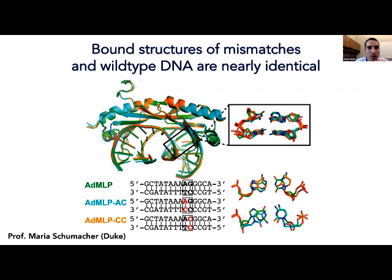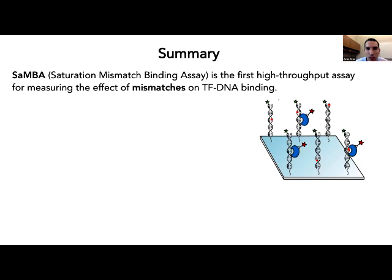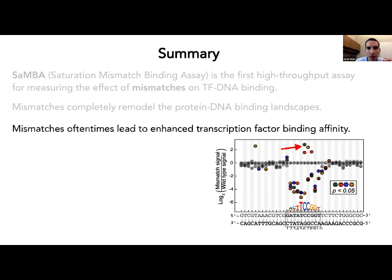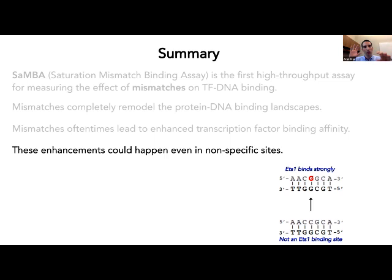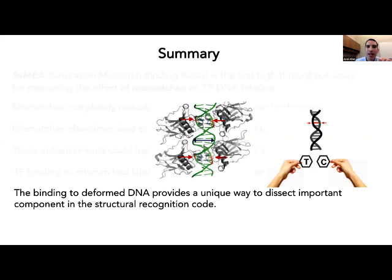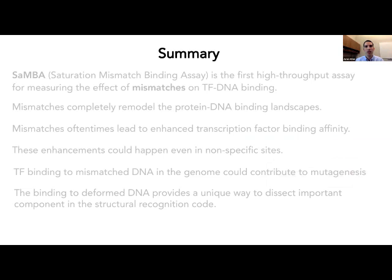To summarize: SAMBA is the first high-throughput assay for measuring the effect of mismatches on transcription factor binding. Mismatches completely change the protein-DNA binding landscape, sometimes leading to enhanced binding within binding sites, and sometimes creating entirely new binding sites in non-specific sequences. The mismatches could lead to mutations, and TF binding could be a factor in mutagenesis. Binding to deformed DNA provides a unique way to dissect important components in the structural recognition code.